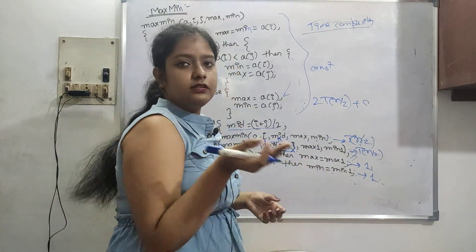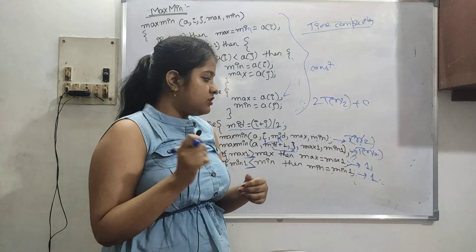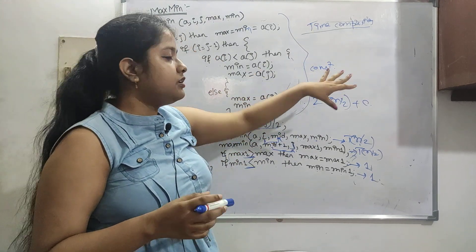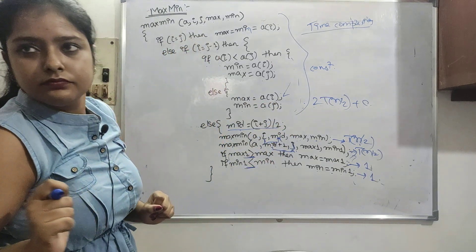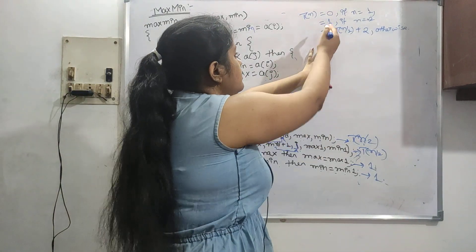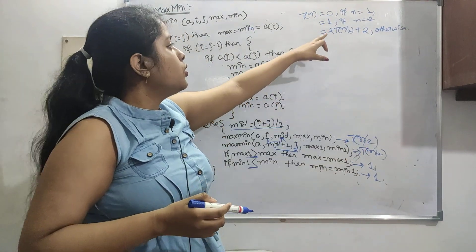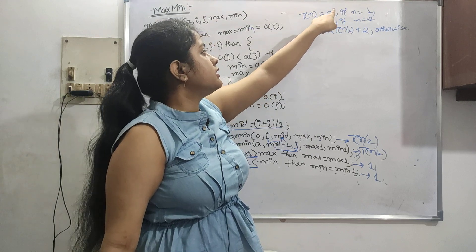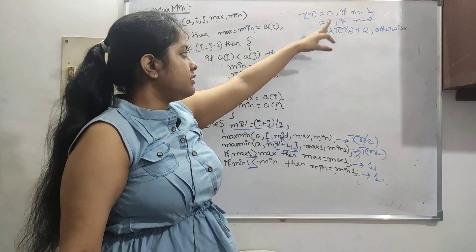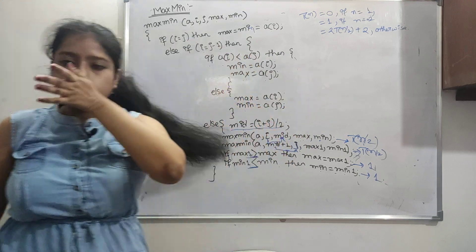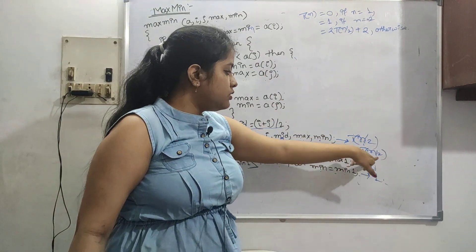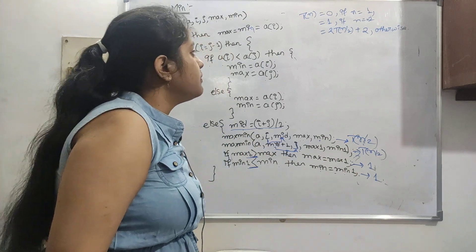Generally we'd apply the Master's Theorem to get O(n), but let me show the full derivation. When there is one element, T(1) = 0. When there are two elements, T(2) = 1. Otherwise the recurrence is T(n) = 2·T(n/2) + 1.